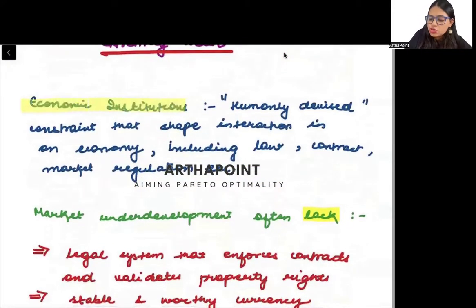So what are economic institutions? Whatever institutes we create, whatever law and order we create, police stations that we are creating, the court that we are creating, other jurisdictions that we are creating. These are all humanly devised institutions.